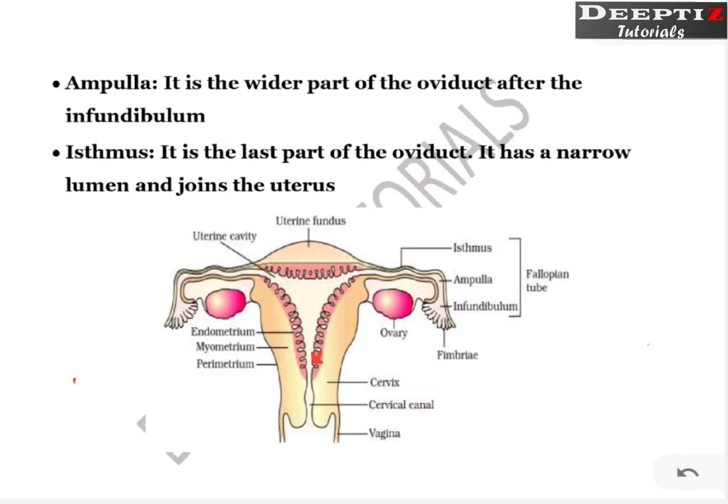Now let us start with the ovaries. There are a pair of ovaries — right side and left side. The ovum or the egg is produced in the ovary. What is the function of the ovary? Ovary has two functions: one is to produce ova or eggs, and the second is to produce hormones — the female ovarian hormones. We will see which those hormones are.